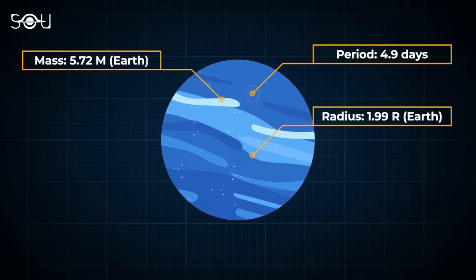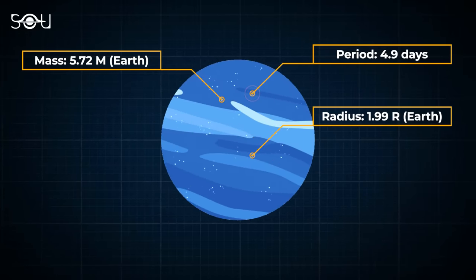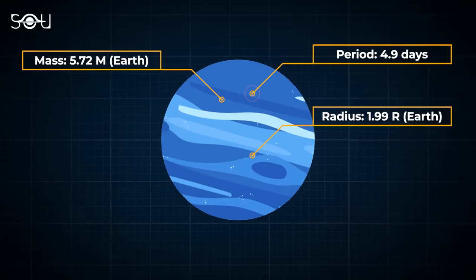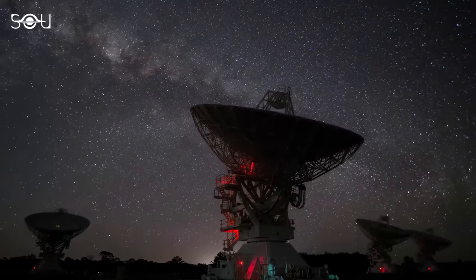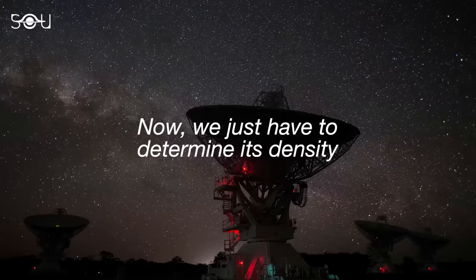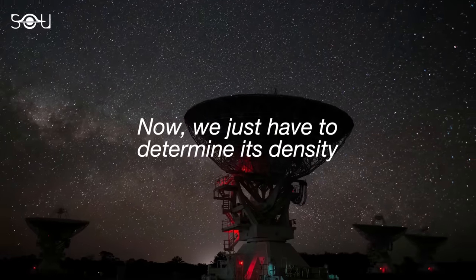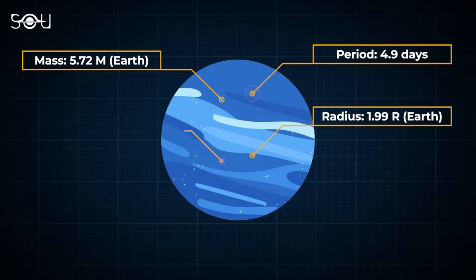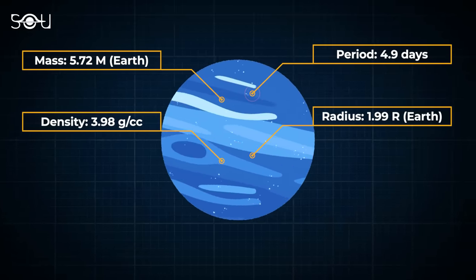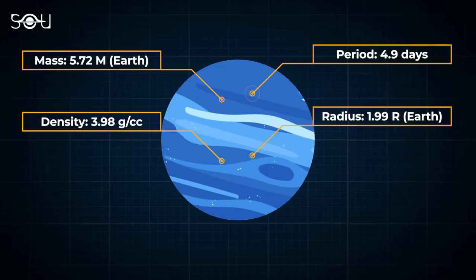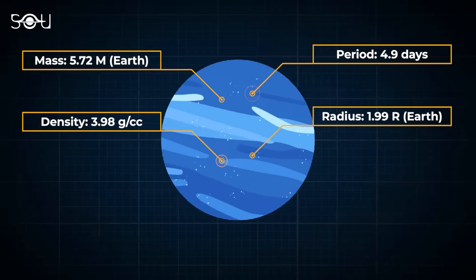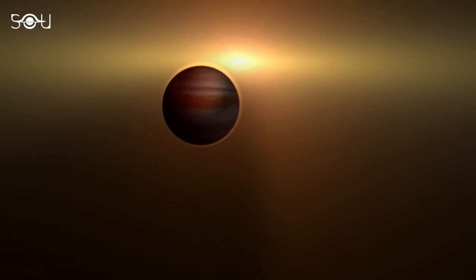The planetary mass of TOI 733b was locked at 5.72 Earth masses by performing the same measurements for the star. The data we have so far, including the planetary mass and radius, allow us to calculate the planet's density. The figures suggest a density of 3.98 grams per cubic centimeter, which is slightly higher than that of Mars and less than Earth's 5.51 grams per cubic centimeter. Now, this is where things take an interesting turn.